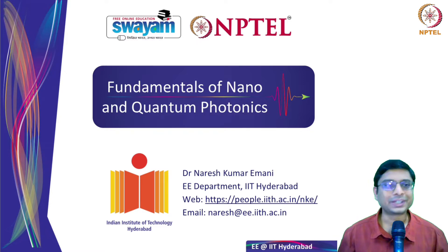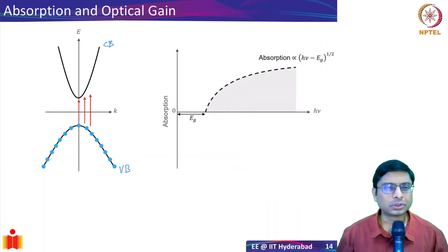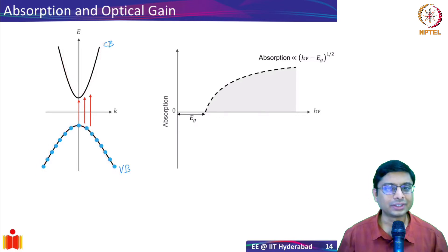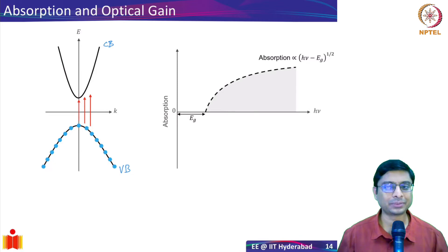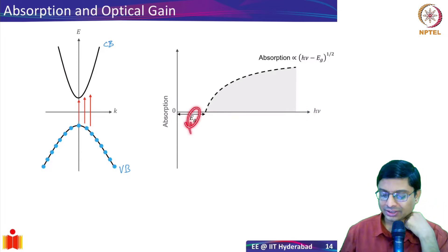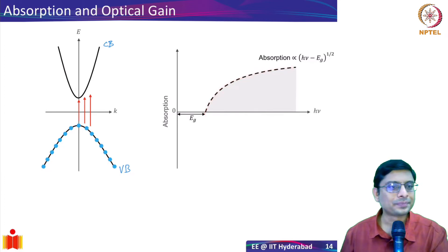With that, my discussion on bulk materials will be done. We have seen absorption already — the valence band and the conduction band, which look parabolic. Whenever you shine light, an electron can go from the valence band into the conduction band; it gets absorbed. We already saw that it exhibits a threshold-like behavior: below the band gap Eg, the photon will not be absorbed, and after Eg the absorption increases parabolically.